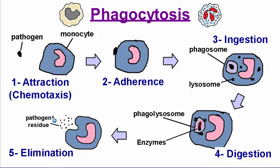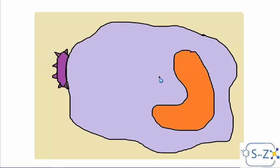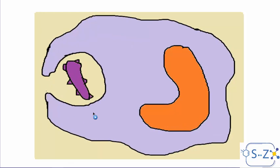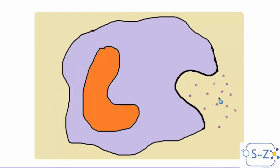The monocyte or macrophage eliminates the pathogen residue outside itself, then starts the phagocytosis process again against other pathogens. To summarize: the macrophage is attracted to the pathogen via chemotaxis, attaches to it, swallows it forming a phagosome, breaks it down with lysosomal enzymes, and finally releases the dead pathogen outside by exocytosis.